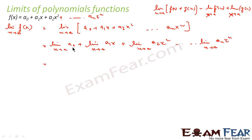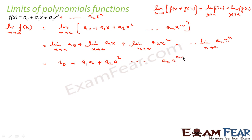And this is nothing but: a0, since there is no x component. Then this will become a1·a. This will become a2·a². And so on. And this is nothing but f(a) — in this function, if you put x equal to a, you'll get this value. So what we have seen is that for f(x), the limit as x tends to a is nothing but f(a).